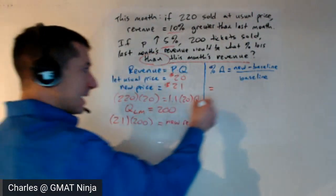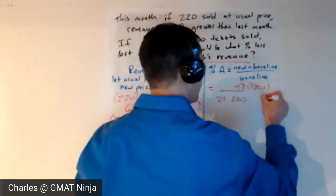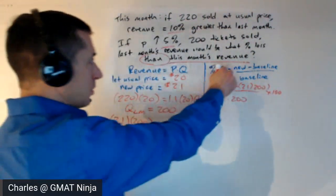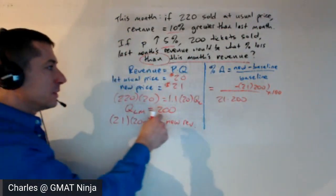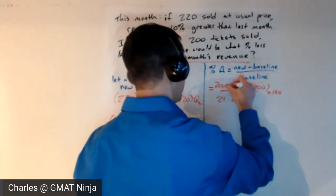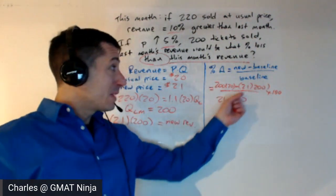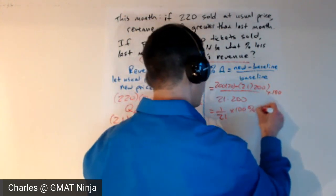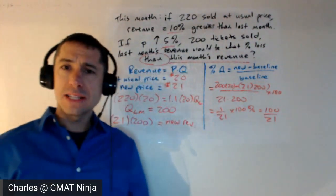So this month's revenue goes in the denominator: 21 times 200. And we multiply by 100 to get the percentage. Last month's revenue — the 'new' in this case — is 200 times $20. Notice that all those 200s cancel out. This turns into something really clean: we just get 1 over 21, times 100%. So our answer is just 100 over 21. And that's it.